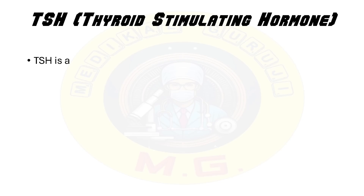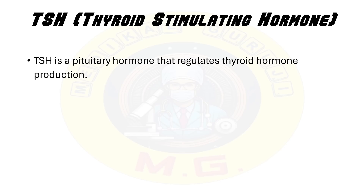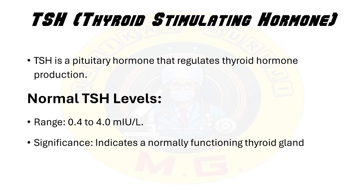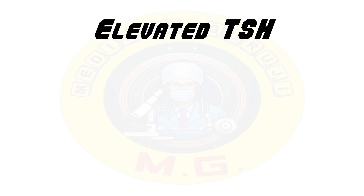TSH, i.e. thyroid stimulating hormone, is a pituitary hormone that regulates thyroid hormone production. Normal TSH levels range from 0.4 to 4 milli-international units per litre, which may vary slightly depending on the laboratory. Normal levels indicate a normal functioning thyroid gland.